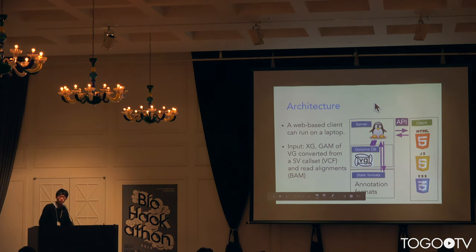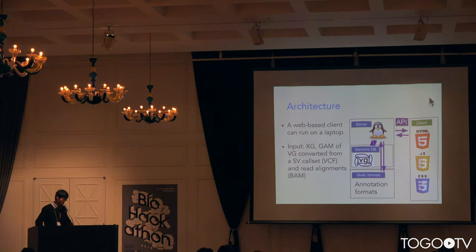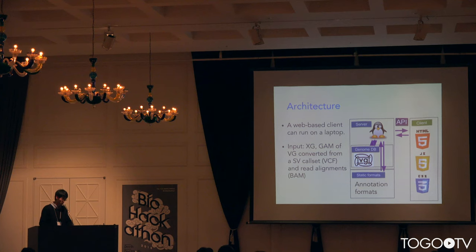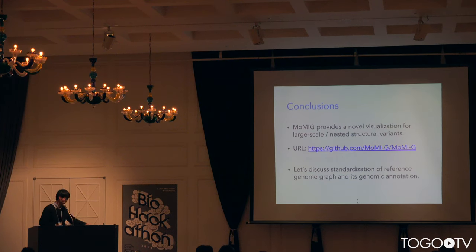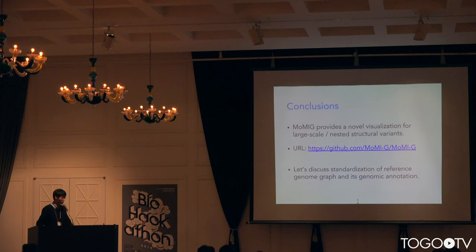Momiji is a web-based tool and you can easily access it from even a laptop. XG file and GAM file from VG are required on the backend server, but they can be generated from an SVDF set and read alignments. Client modules are implemented in TypeScript and React, and the layout of the modules is customizable. Momiji provides novel visualization for large-scale and complex structural variants, and it has already been published on GitHub under the MIT license.